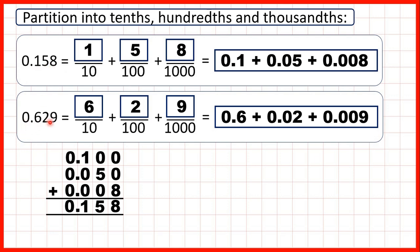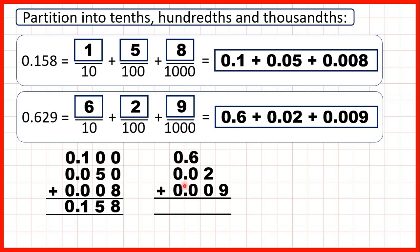For 0.629 we saw that that was 0.6 plus 0.02 plus 0.009. Again we can write the numbers out with the decimal points lined up so that our place values are lined up as well. We can write zeros in empty squares, then write the decimal point in our answer. Adding each column gives us 0.629 — the number that we started with.